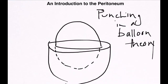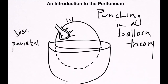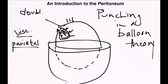Assume somebody tries to put his fist inside this balloon — the balloon is not going to be punctured, but the part of the balloon adherent to the fist is technically known as the visceral peritoneum, and the part outside that lies against the inner aspect of the abdominal wall is known as the parietal peritoneum. If I make the wrist of this fist disappear and draw an organ instead, the region that is formed becomes a double fold of peritoneum.